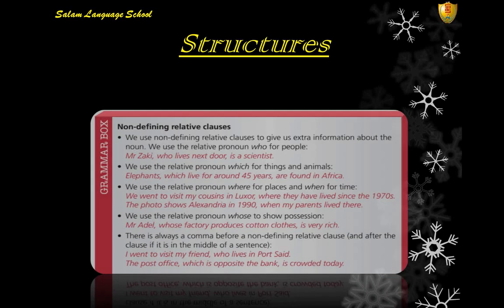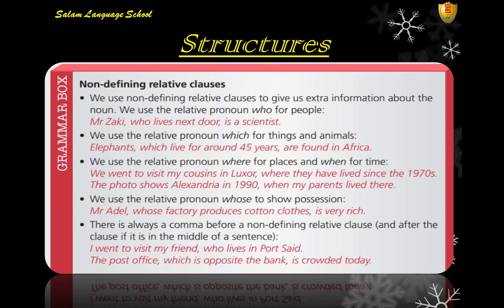Now let's look at non-defining relative clauses. We use these to give extra information about a noun. We use the relative pronouns: 'who' for people, 'which' for things and animals, 'where' for places, and 'when' for time. For example: 'Mr. Zaki, who lives next door, is a scientist' — 'who' for people. 'Elephants, which live for around 45 years, are found in Africa' — 'which' for animals.